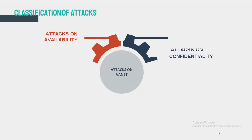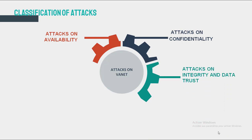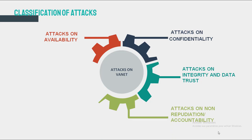Attack on confidentiality: confidentiality is very important for communication to be reliable, and the absence of this mechanism can lead to security problems such as packet dropping attacks or man-in-the-middle attacks. Attack on integrity and data trust: the integrity mechanism doesn't allow the alteration of information during sending, and the absence of integrity leads to replay attacks and message tampering. Attack on non-repudiation or accountability: the non-repudiation mechanism allows us to verify the sender and receiver identity, and any violation of this mechanism can lead to attacks like loss of traceability.